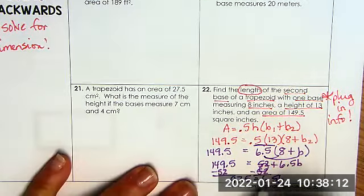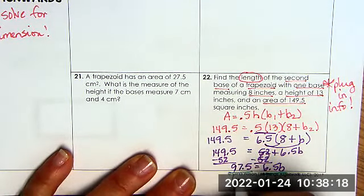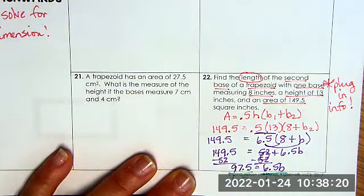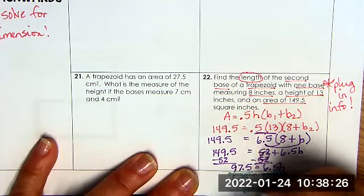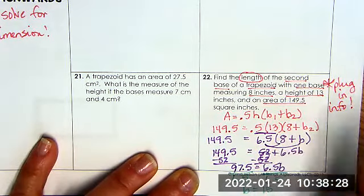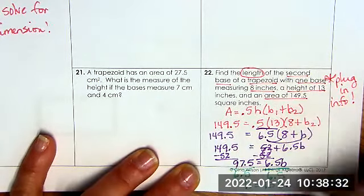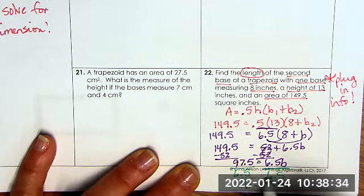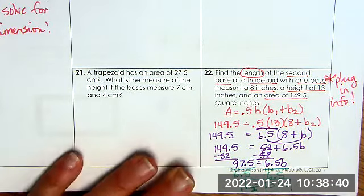So I now end up with 149.5 minus 52, which gives me 97.5 equals 6.5B. And we divide by 6.5 to both sides. And I end up with B equals 15. This is all in inches. So I have to have my units. My B2 is 15 inches.